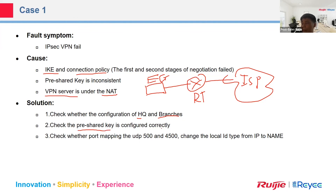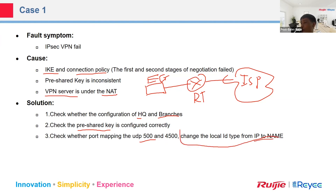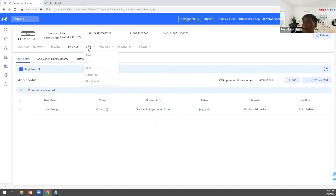The pre-shared key should be the same on both sides; otherwise the IPSec tunnel cannot be established. If our gateway is behind a NAT router, we need to open UDP port 500 and UDP port 4500, and change the local ID type from IP to name.